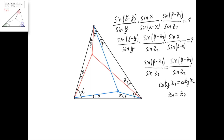Let's apply the sine form of Ceva's theorem for the original point. We get: sine of (gamma minus y) divided by sine of y, times sine of x divided by sine of (alpha minus x), times sine of (beta minus z1) divided by sine of z1, equals 1.